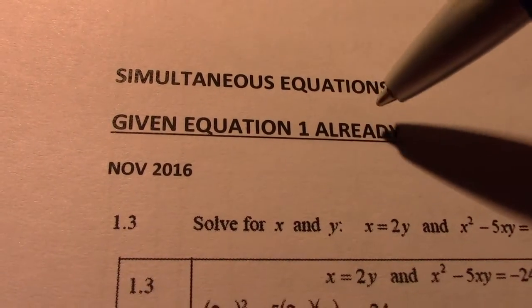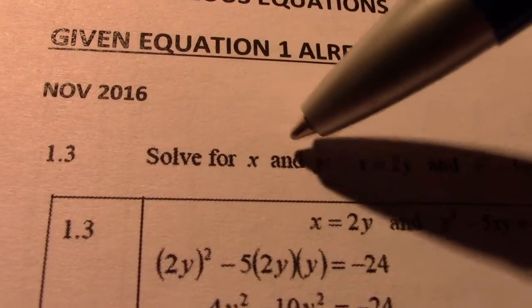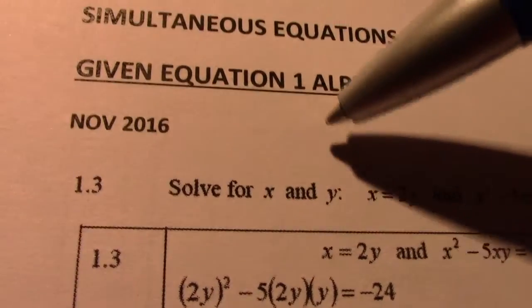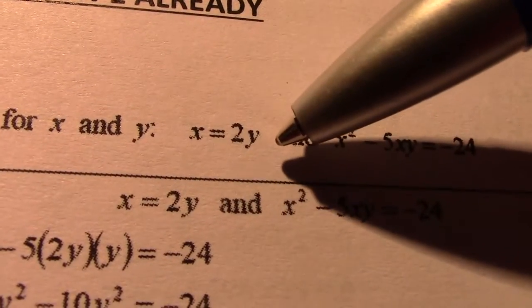So as usual, I'm starting with the easier one where equation 1 is created already for you. If we look at November 2016, it says solve for x and y. So whenever I say x and y, we're generally dealing with a simultaneous equation. So two equations must be given.